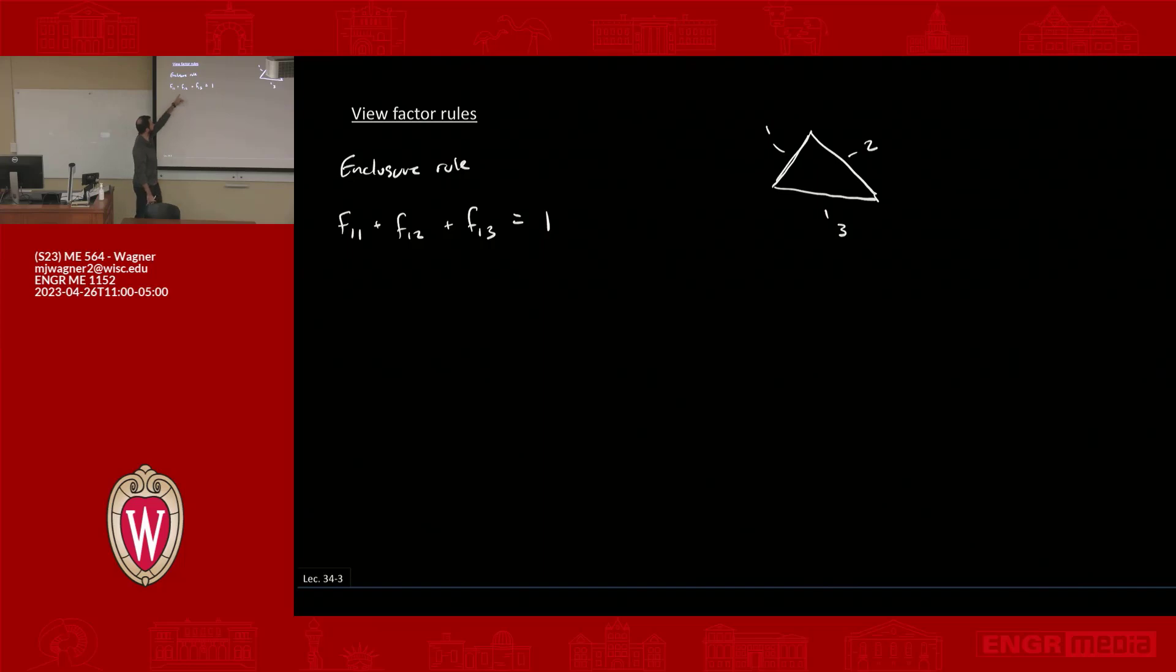We're saying from one to another surface, from one to another surface, and so on. We can do the same thing for surface two: f₂₁ + f₂₂ + f₂₃ also equals one. That's a separate application of the same enclosure rule for a different surface. Don't make the mistake when you're just writing out math of saying f₁₁ + f₂₁ + f₃₁—if you put the indices around, it doesn't hold anymore. It's always from the emitting surface to all the other surfaces.